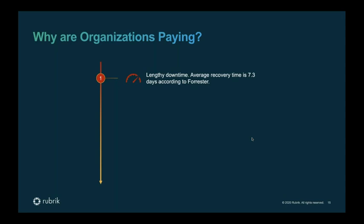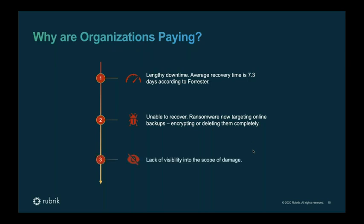It takes the average customer over seven days, according to Forrester, to get back to a steady state of operation. And sometimes, because ransomware has evolved, it understands how to target legacy backup platforms — taking them out of the equation and making it completely impossible to actually recover. The other impact is having visibility into the actual scope of the damage. Doing a differential analysis of what was changed, impacted, or encrypted is often very time-consuming or not even possible. In that time, the business decision to pay the ransom becomes more critical.